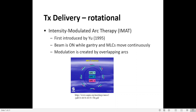Rotational IMRT is another option of treatment delivery in IMRT. It was first introduced in 1995 and was called Intensity Modulated Arc Therapy, IMAT. In IMAT, the beam is on while the gantry and MLCs move continuously, and modulation is created by overlapping arcs. The pros of IMAT are more options for the optimizer to deliver the dose, resulting in less modulation compared to conventional IMRT. The con is that it requires several superimposed arcs to achieve a good dose distribution.